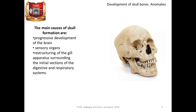Anatomical development of skull bones. The main causes of skull formation are the progressive development of the brain and sensory organs, and the restructuring of the gill apparatus surrounding the initial sections of the digestive and respiratory systems.